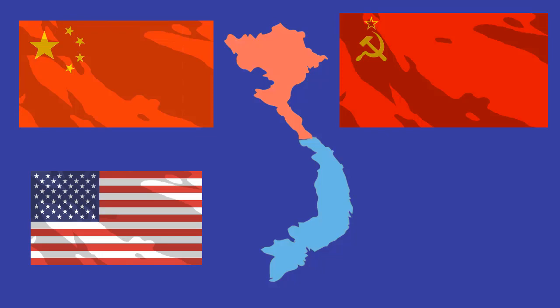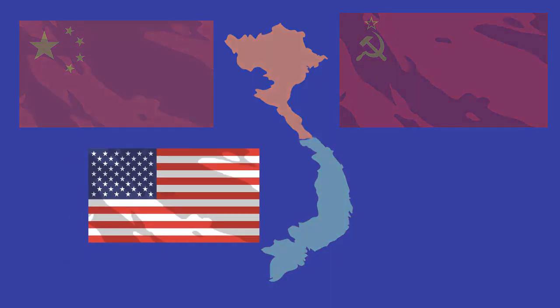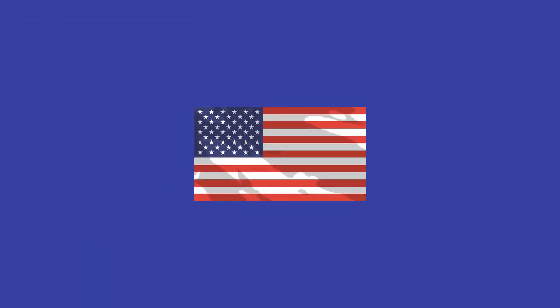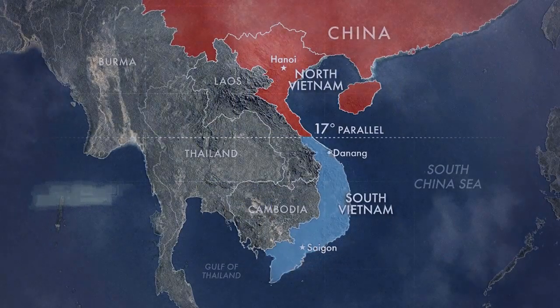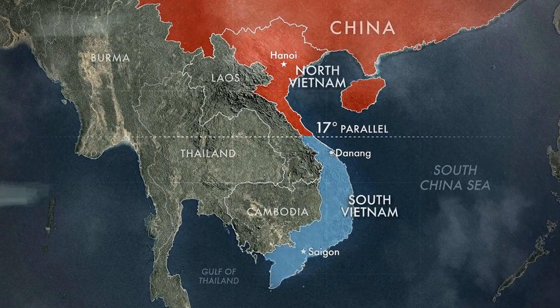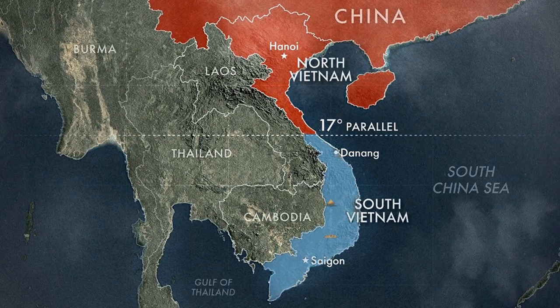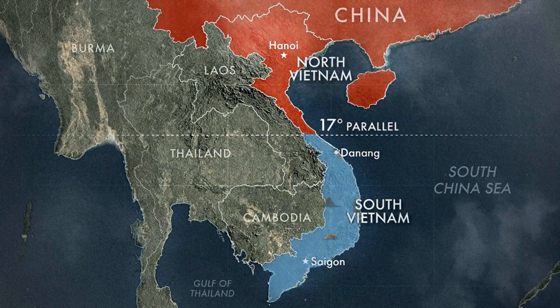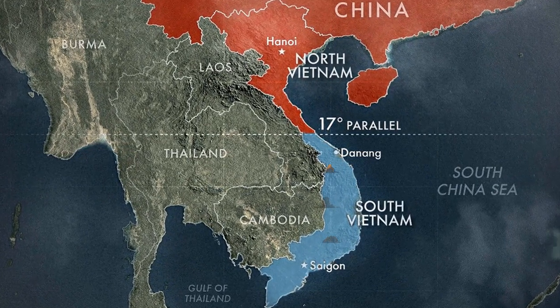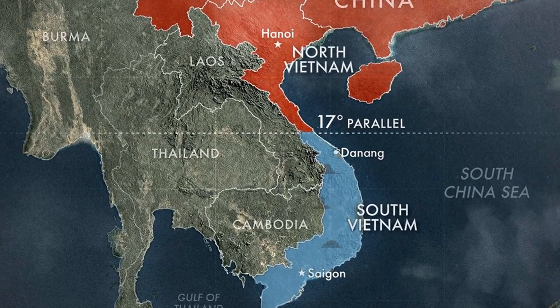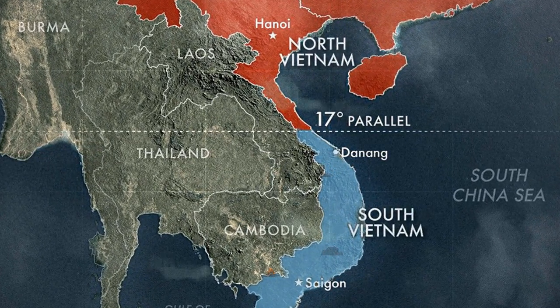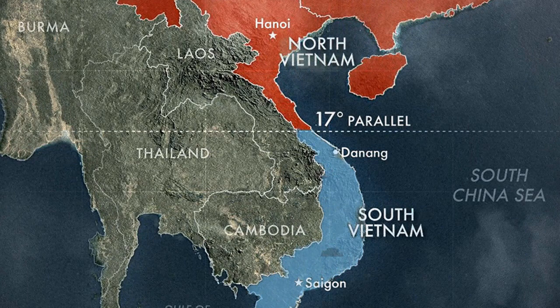So now we know why the United States was in Vietnam, but before we can answer why they left, let's answer how they left. In January 1968, the North Vietnamese launched the Tet Offensive, which was a series of surprise attacks during the Vietnamese New Year, during which most of the South Vietnamese soldiers were on holiday.